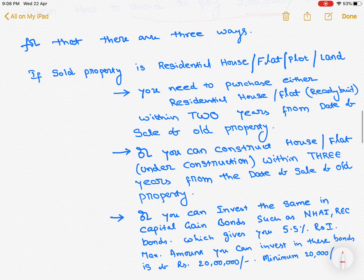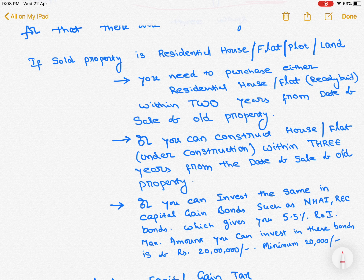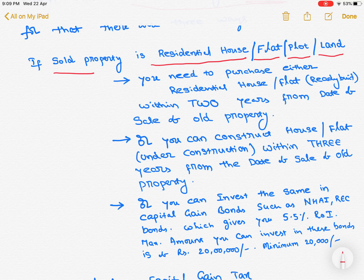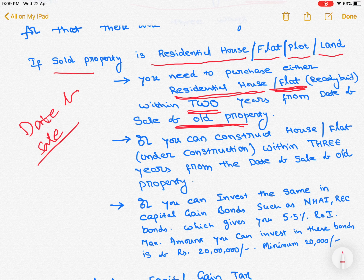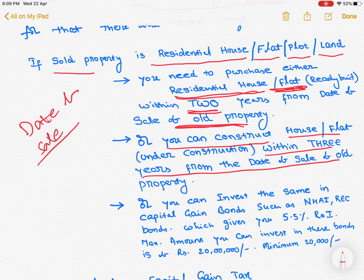What are the 3 ways? If the sold property is a residential house, residential flat, residential plot, or residential land, then from the date of sale, you need to purchase either a residential house or residential flat — ready built — within 2 years from the date of sale of the old property. Or you can construct a house or flat within 3 years from the date of sale of the old property.